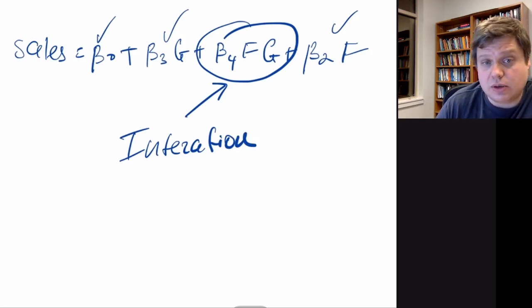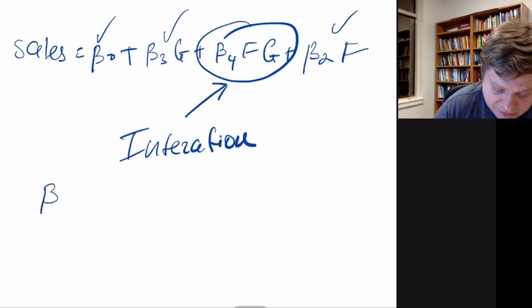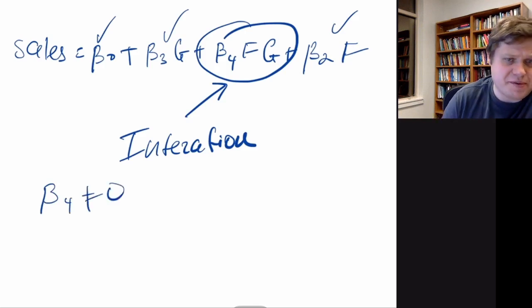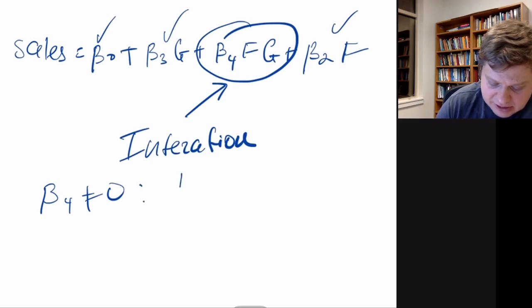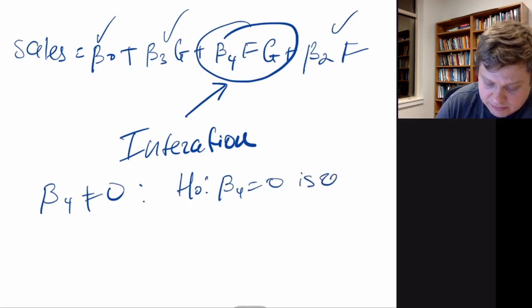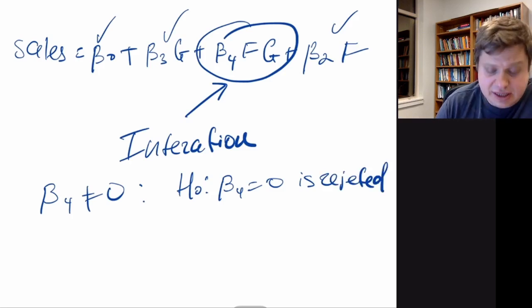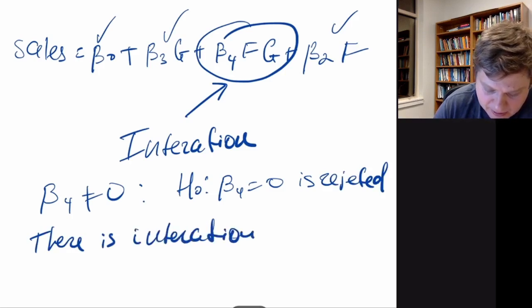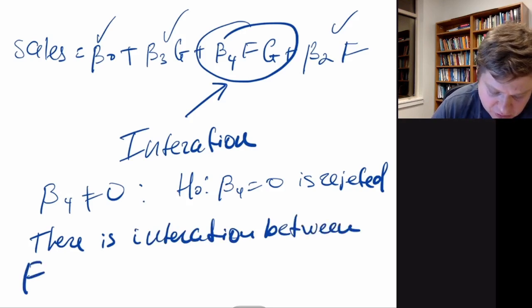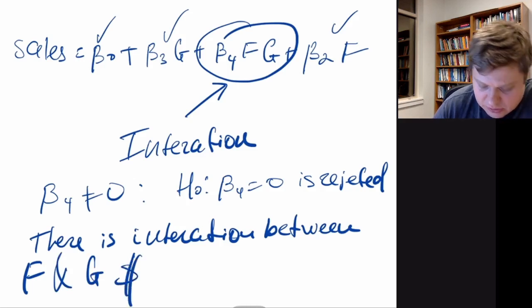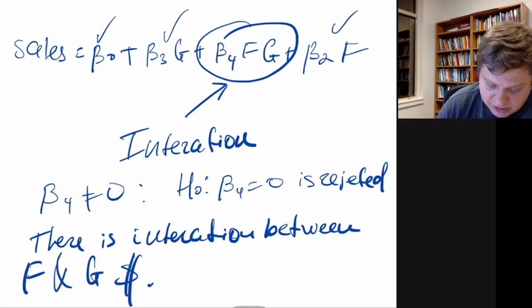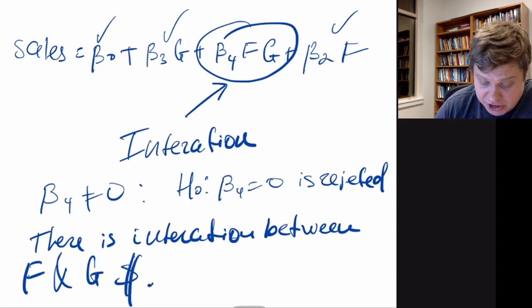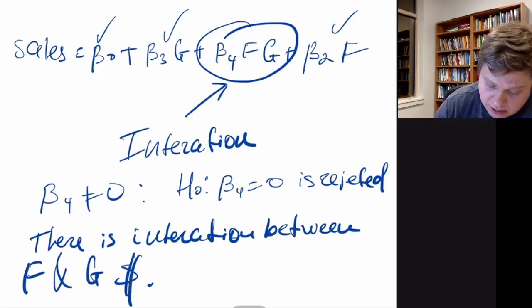An interaction term allows us to understand the relationship between dollar spend on Facebook and Google and how they affect each other. If beta 4 is not equal to zero — meaning statistically not zero, i.e., the null hypothesis that beta 4 equals zero is rejected — we say there is interaction between Facebook and Google dollars. Interaction exists if beta 4 is not zero. Now let's look at the sign.